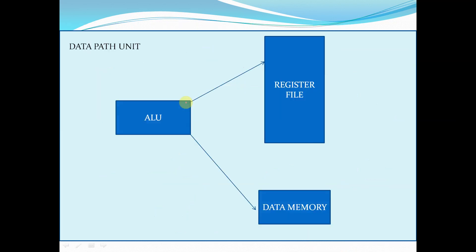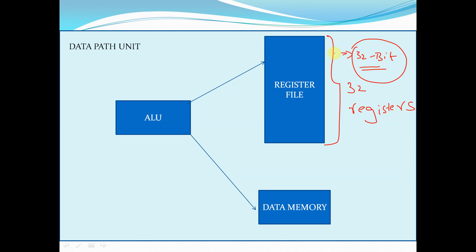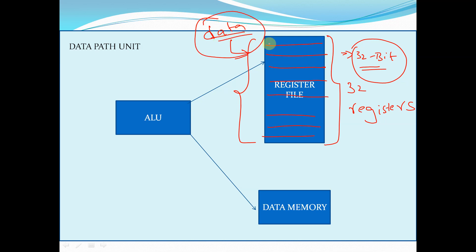The data path consists of three modules: ALU (arithmetic logic unit), register file, and data memory. This is a 32-bit RISC-V architecture, so it will consist of 32 registers, and the size of each register is also 32-bit. In case of R type instructions, the data will be stored in this register file. By default, while coding, each register will contain particular data after the reset condition — there is no need to load any data into the registers.